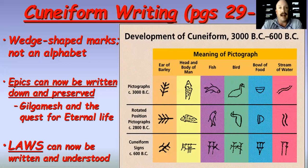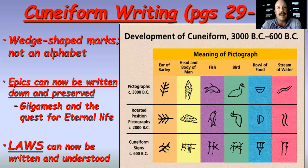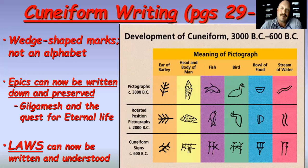That has both good and bad implications. Good things: epics can now be written down, stories can be preserved forever — not just oral stories in the memories of men and women told over the nightly fire. These stories could be written and preserved and saved. The Epic of Gilgamesh is one of these stories. Your book talks about the Epic of Gilgamesh — read through it and get a sense of what the Mesopotamians believed about themselves.